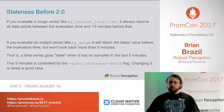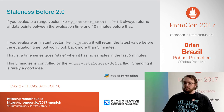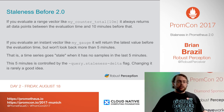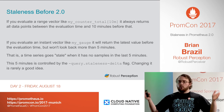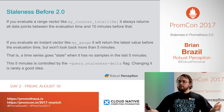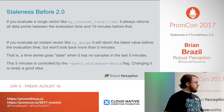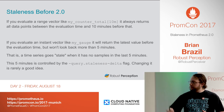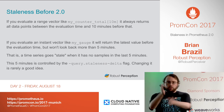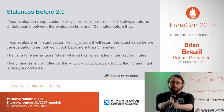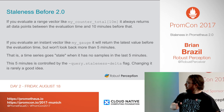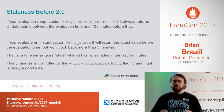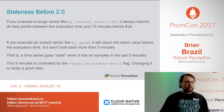Before 2.0, anywhere up to Prometheus 1.8.1, if you evaluate a range vector — like looking at a counter for 10 minutes — it's always going to return all data points in that range inclusive. If you evaluate an instant vector like a gauge, it'll return the latest value before the evaluation time looking back five minutes, which is to say that if a time series gets no updated data points for five minutes, it goes stale and is no longer returned for instant vectors.